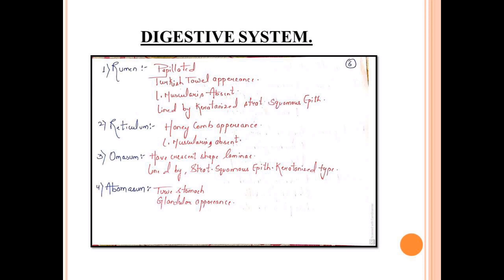As you all know, the stomach has four chambers in the case of ruminants: rumen, reticulum, omasum, and abomasum. Now we will see some characteristics. Rumen has Turkish towel appearance because of the papillae. It has lamina muscularis which is absent, but has propria submucosa. The lining is keratinized type of stratified squamous epithelium.